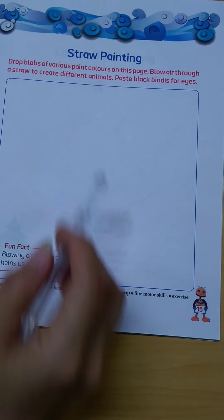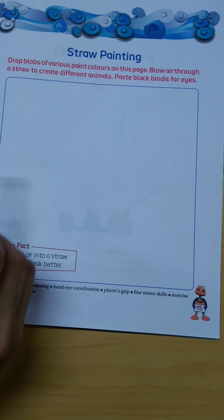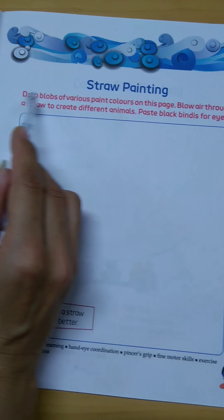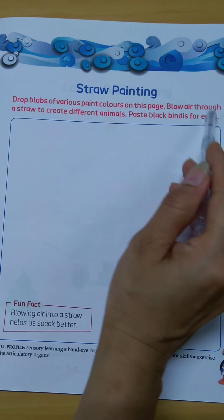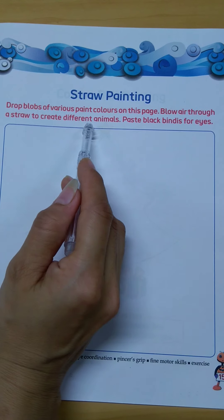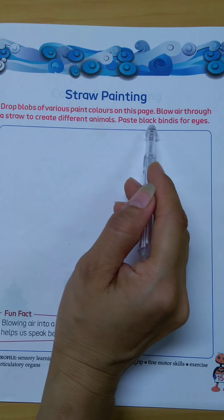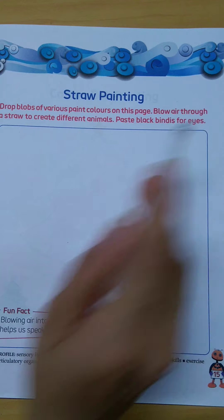Today we will do straw painting. First I will read what is written here. Drop blobs of various paint colors on this page. Blow air through a straw to create different animals. Paste black binders for eyes.